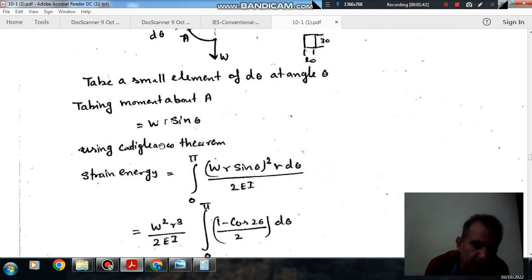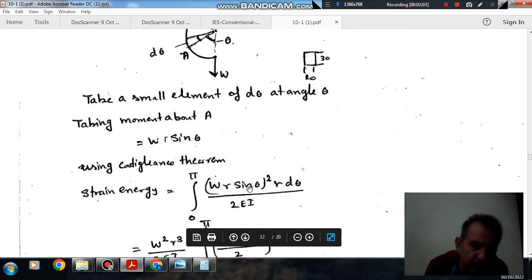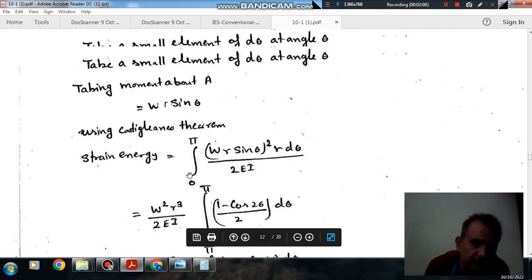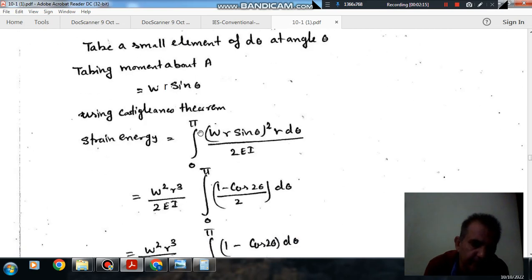Strain energy is M square dx over 2EI. Here dx or ds is R into d theta and moment is W R sin theta. So strain energy is W R sin theta square into R d theta divided by 2EI. And limits of theta is 0 to pi.